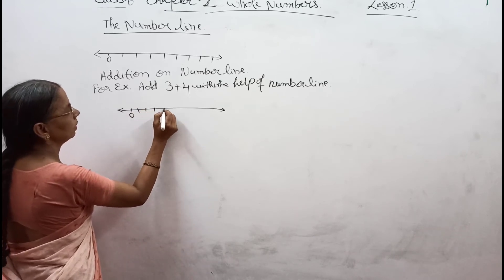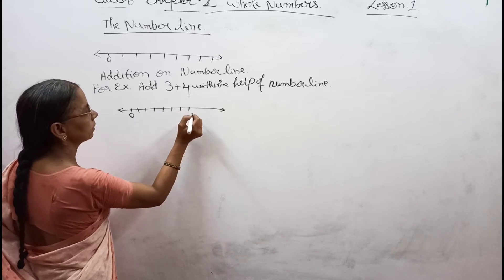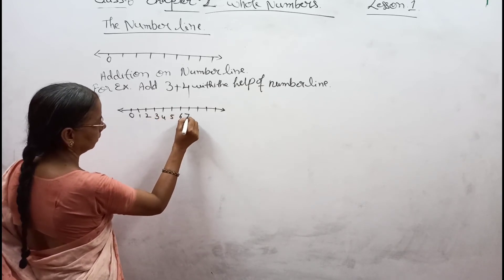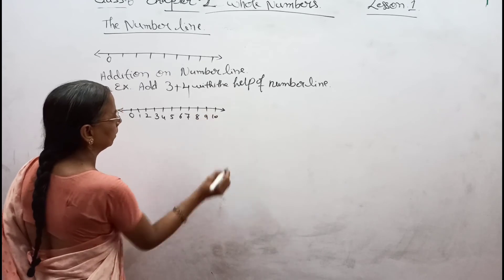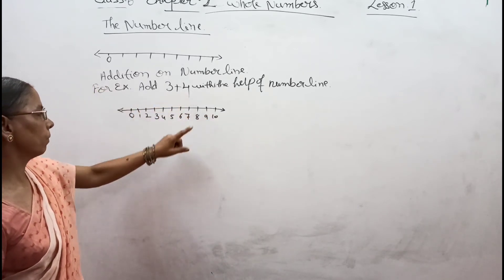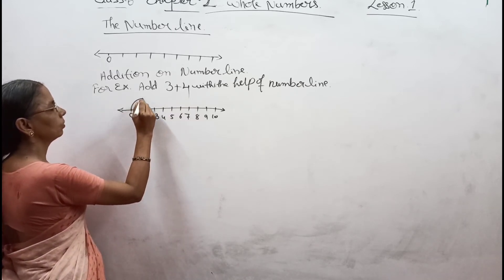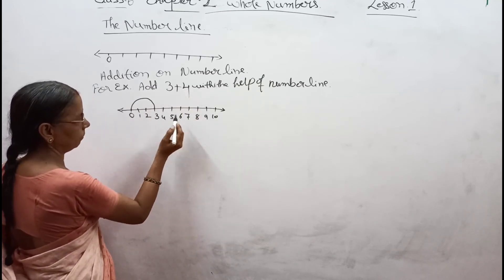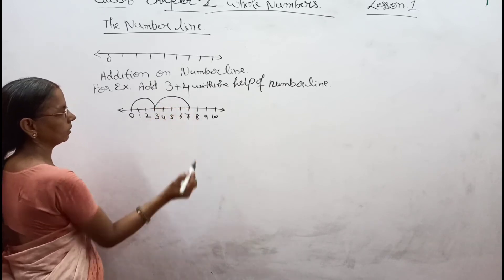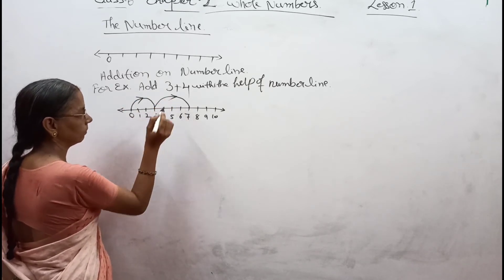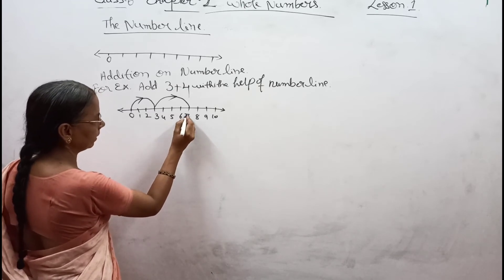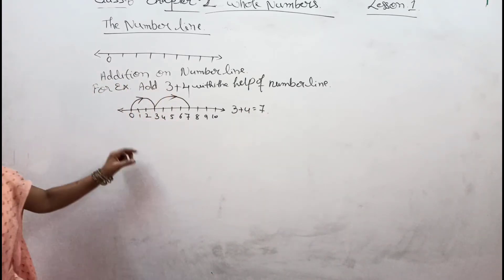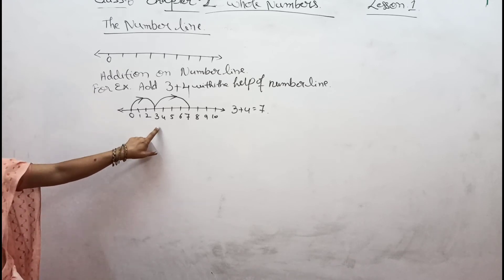We mark the numbers 0, 1, 2, 3, 4, 5, 6, 7, 8, 9, 10. The first number is 3 and the second number is 4. We start from 0 to 3, then count 4 more numbers — 1, 2, 3, 4. By adding 3 plus 4, we get 7. So 3 plus 4 equals 7. Like this, we can represent addition of numbers on a number line.